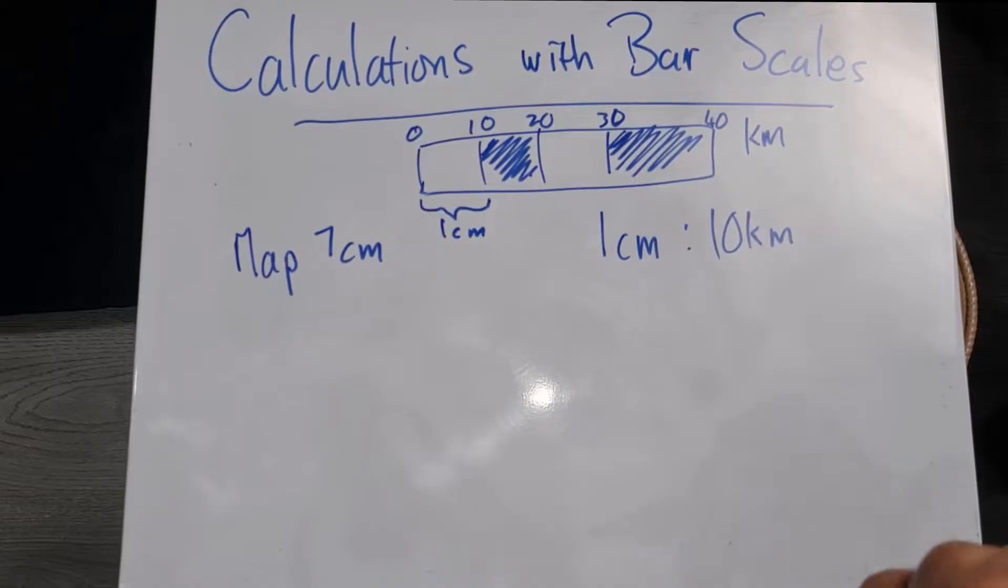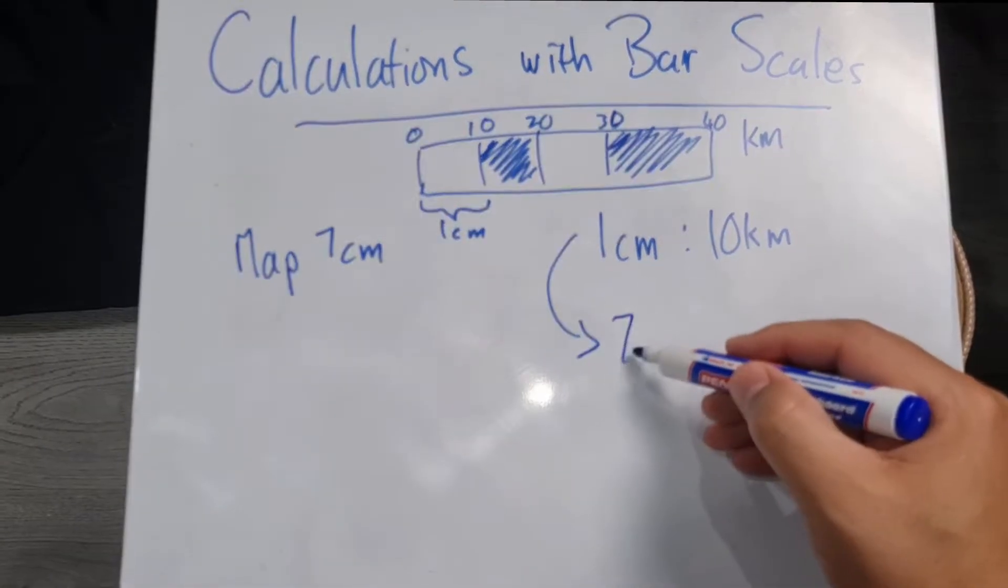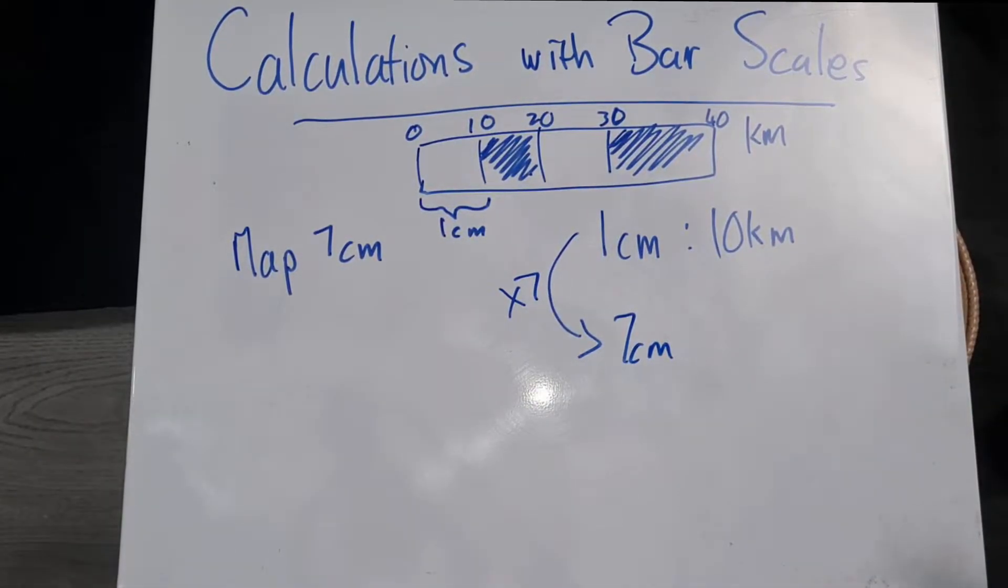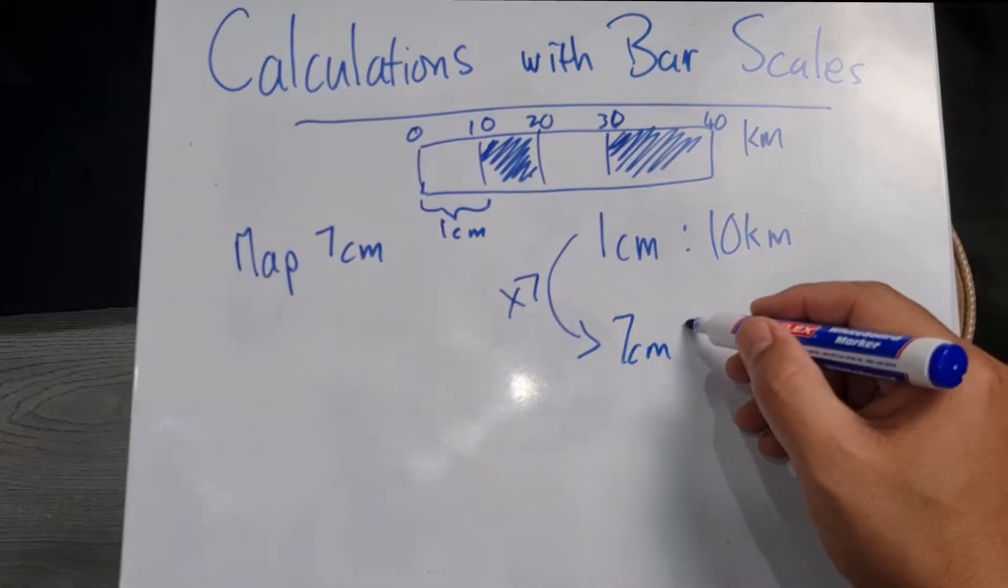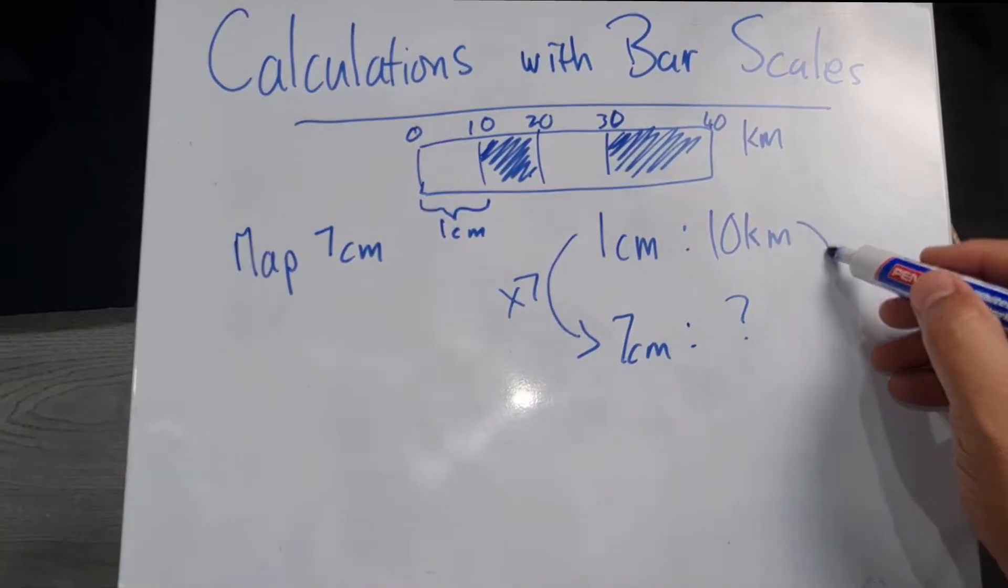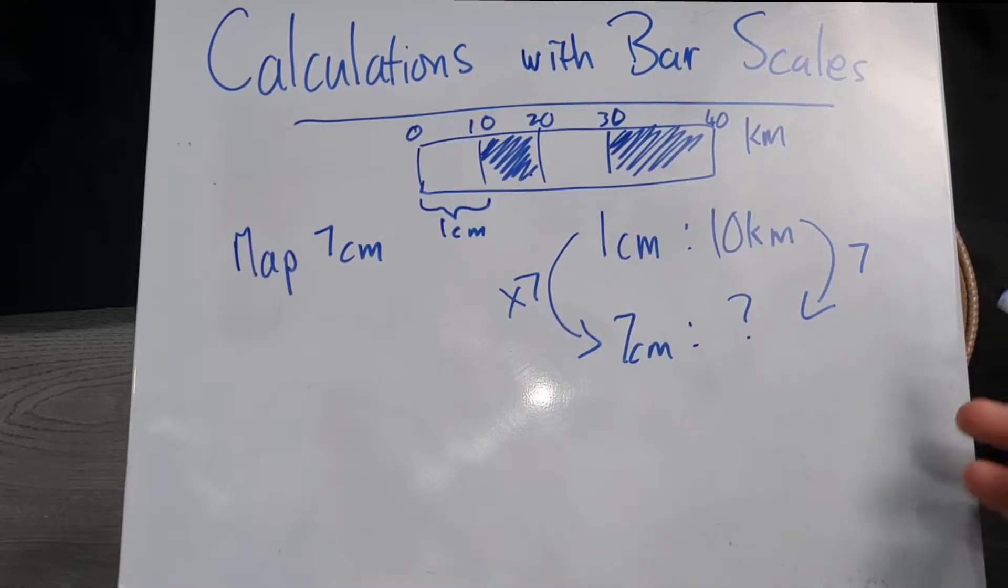But if I'm going to do that, I don't know what this side is going to be. But if I've done it to the one side, I'm going to have to do it to the other side. So now what's going to happen is I'm going to have my 10 kilometers multiplied by seven.